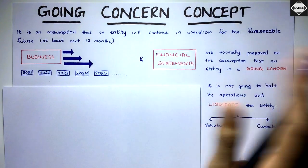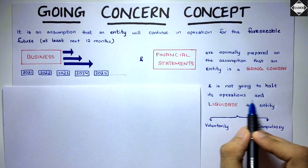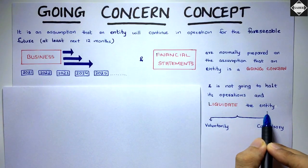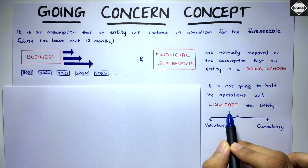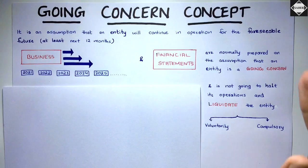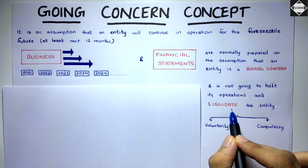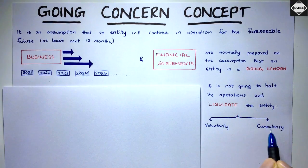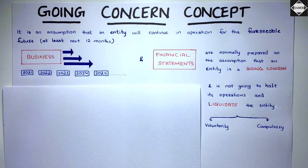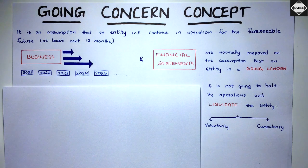The entity is not going to stop its operations and liquidate. Liquidate means legally closing down the business, which can happen either voluntarily or compulsorily because of a court order. That's the going concern concept — it's simple, but there's one more thing to understand.